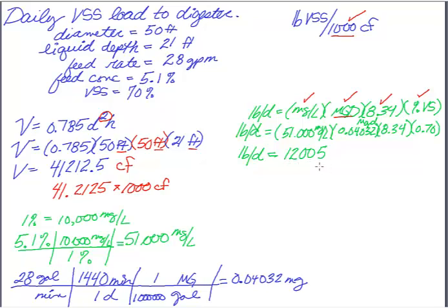So I'm going to try this one more time. Make sure I punch it in correctly. So I'm going to say 51,000, 0.04032 times, 8.34 times, 0.7. And I've got the same number both times. So I've got 12,005 pounds per day, and I'm putting that into 41,212 cubic feet.